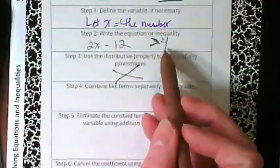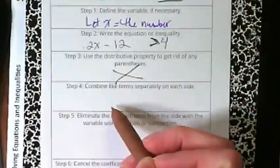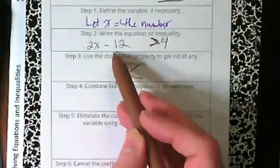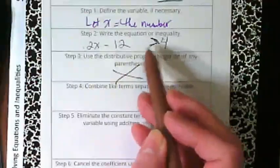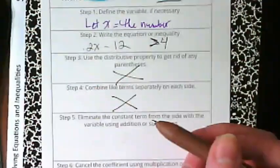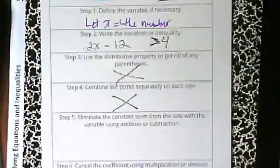2x minus 12 is greater than 4, are there any like terms to combine? No. The 12 and the 4 are like terms, as I just heard somebody say, but they're on opposite sides of the inequality symbol. So we don't need to combine like terms before we go across the symbol.